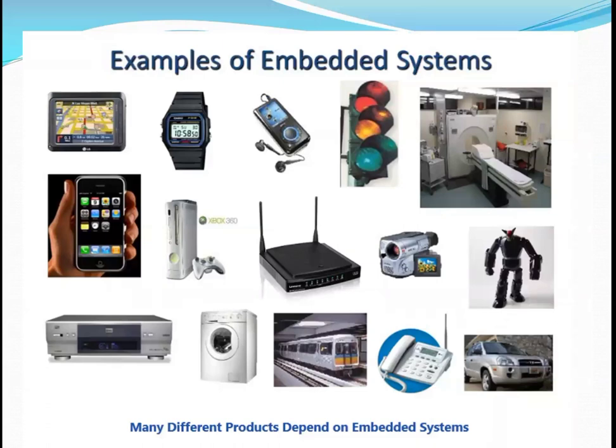Examples of embedded systems include GPS monitors, digital clocks, MP3 players, traffic lights, MRI scanners, tiny robots, electric cars, washing machines, and microphones. These are all kinds of embedded system examples.